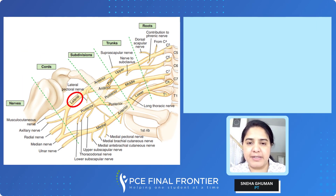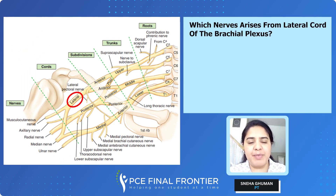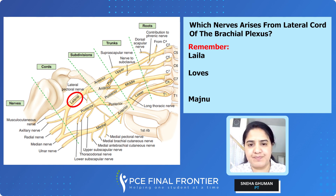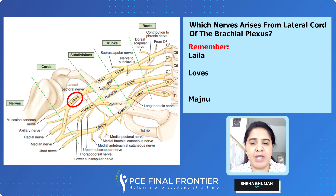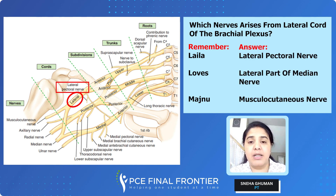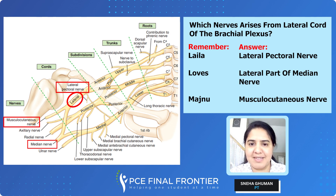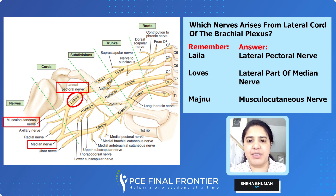Let's start with the lateral cord of brachial plexus. To remember the nerves arising from the lateral cord, remember: Laila loves Majnu. On a piece of paper, write down Laila, below it write loves, and last write Majnu. That stands for: lateral pectoral nerve, lateral part of median nerve, and musculocutaneous nerve.